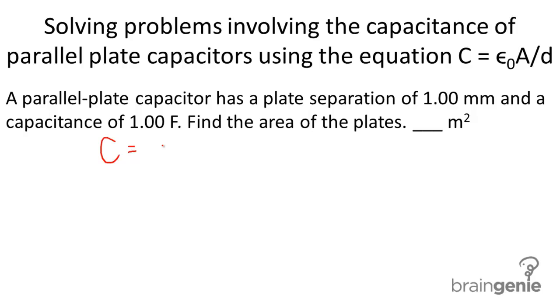Okay, so we have our equation C equals epsilon zero A divided by D. We're solving for A here, so we're going to rearrange this equation to solve for A and we get C times D divided by epsilon zero.